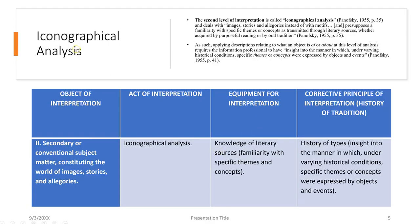The iconographical level of interpretation is the second level. Panofsky says it deals with images, stories, and allegories instead of motifs, and presupposes a familiarity with the subject or theme. This is the conventional subject matter. Usually a person working in a museum or archive — an information professional or museum curator — has a history of or has studied whatever the subject matter is at hand, whether it's cuneiform script, Egyptology, or anything like that. That's how we get at the iconographical analysis of interpretation.